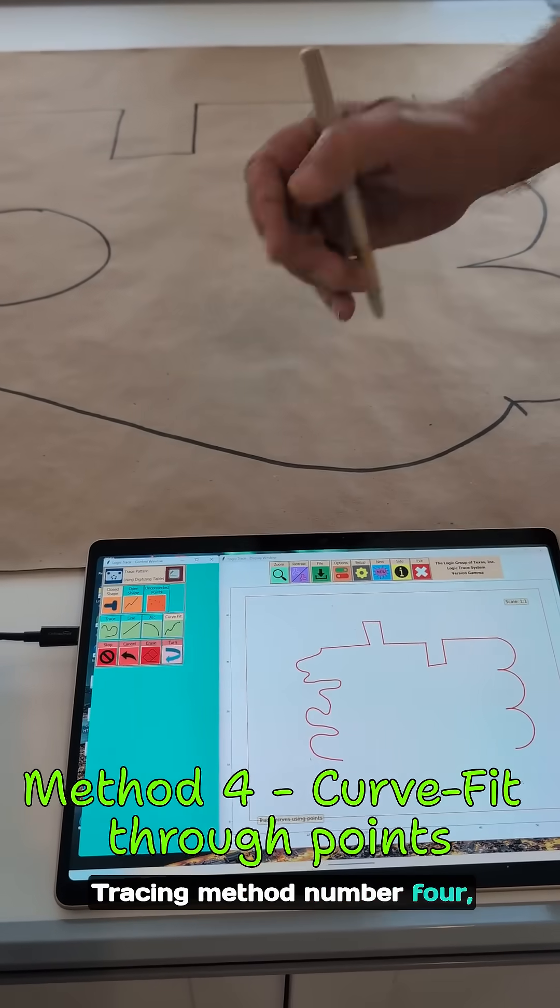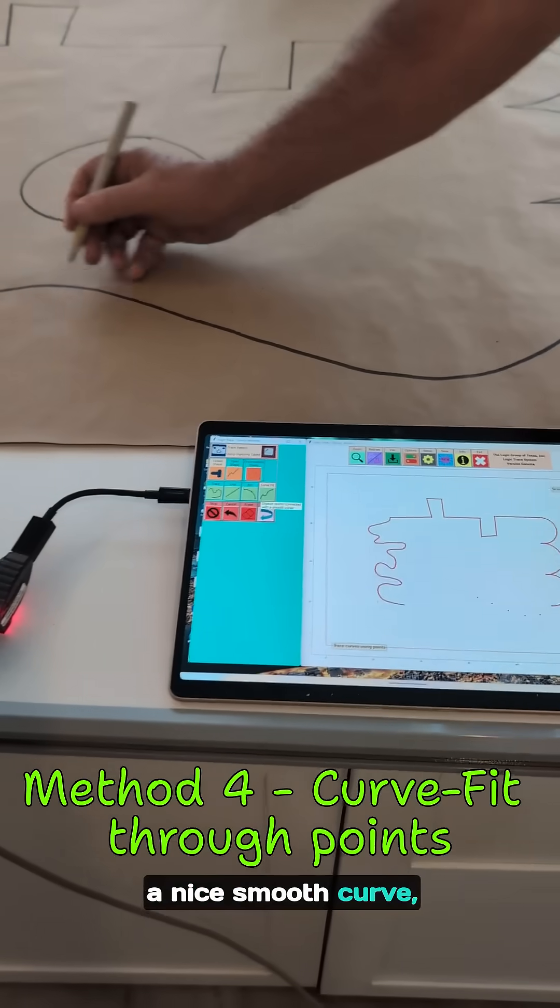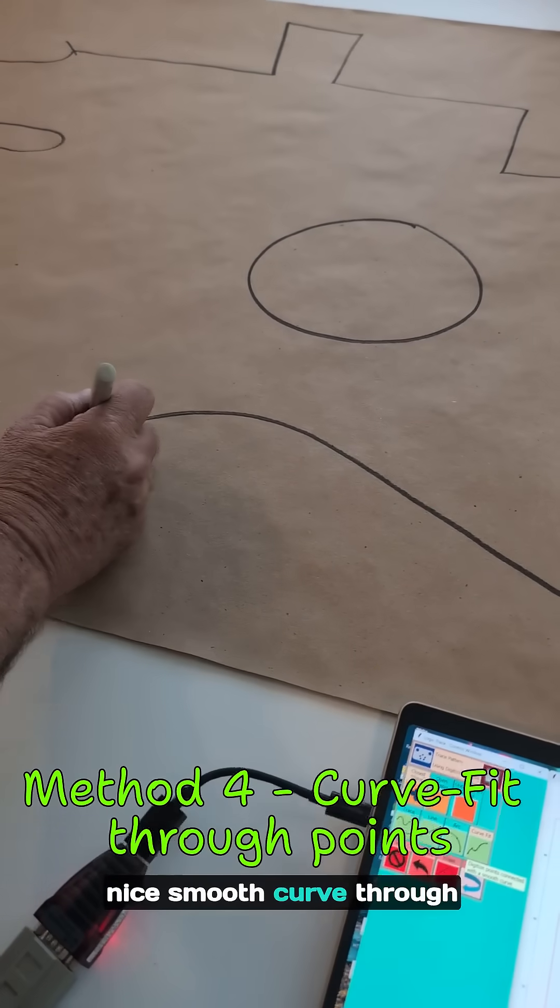Tracing method number four: curve fit through points. You just do points along a nice smooth curve, and then it's going to put a nice smooth curve through all those points.